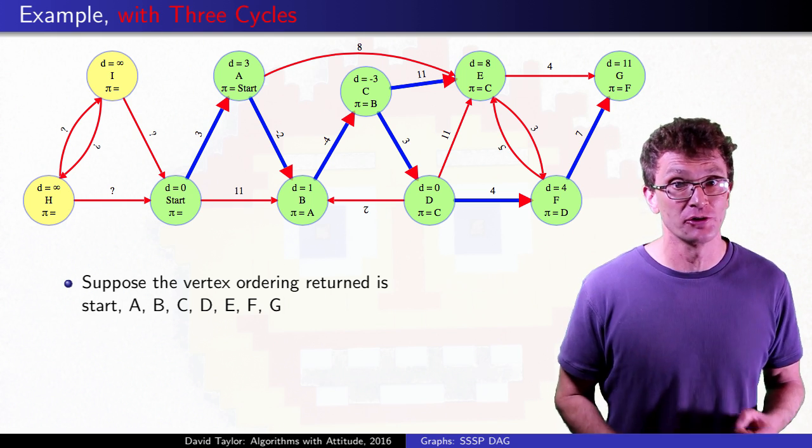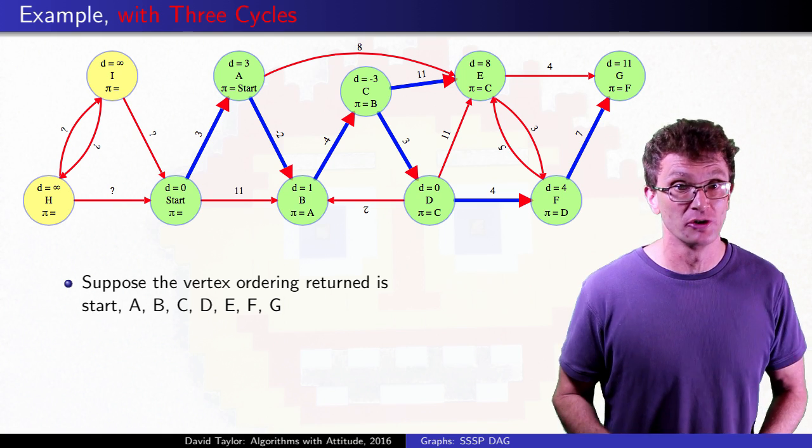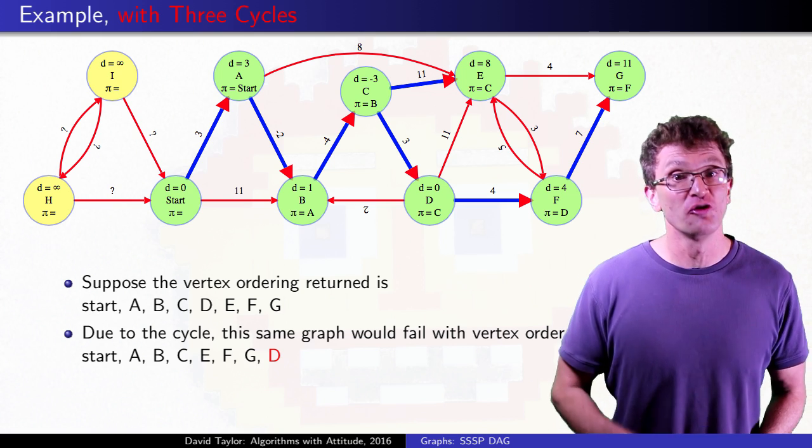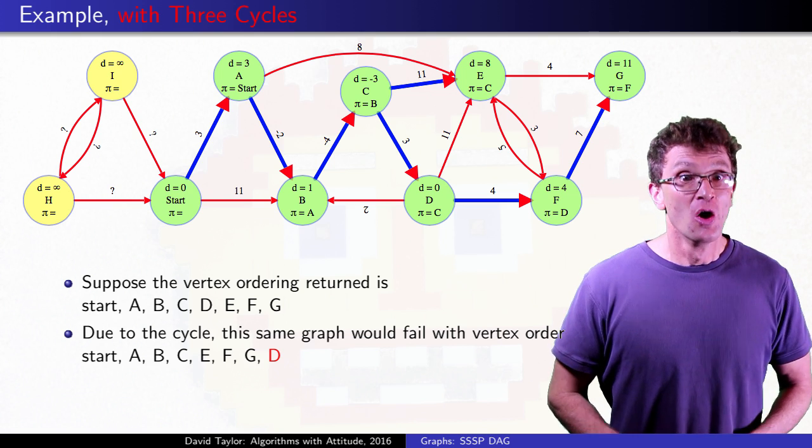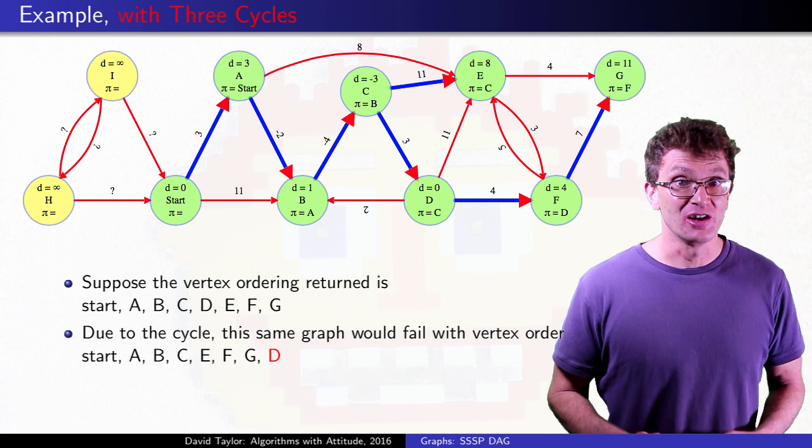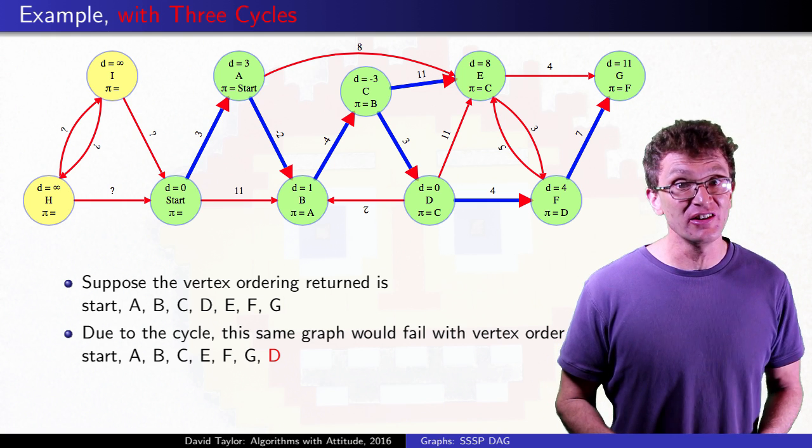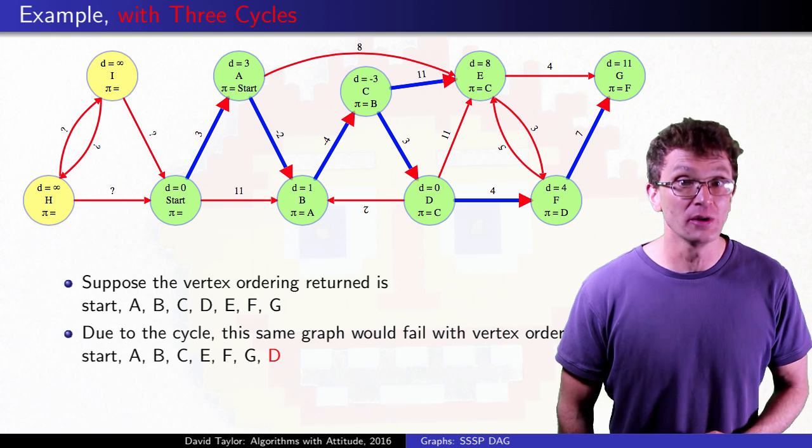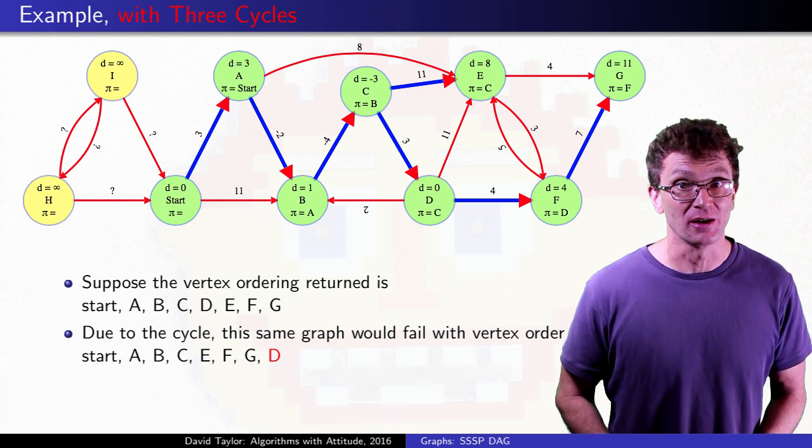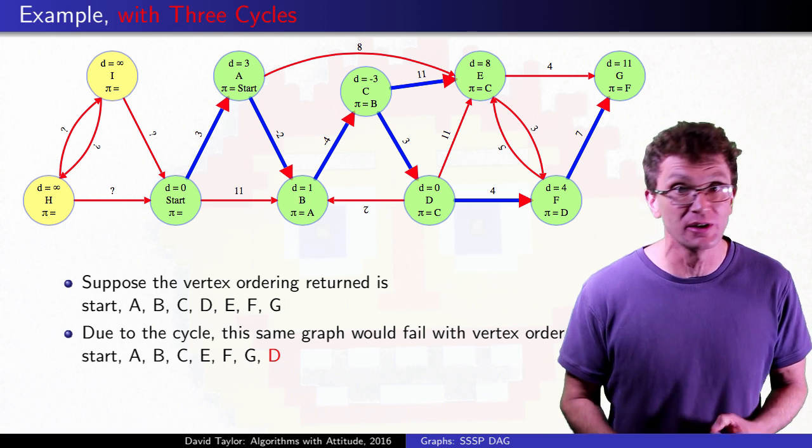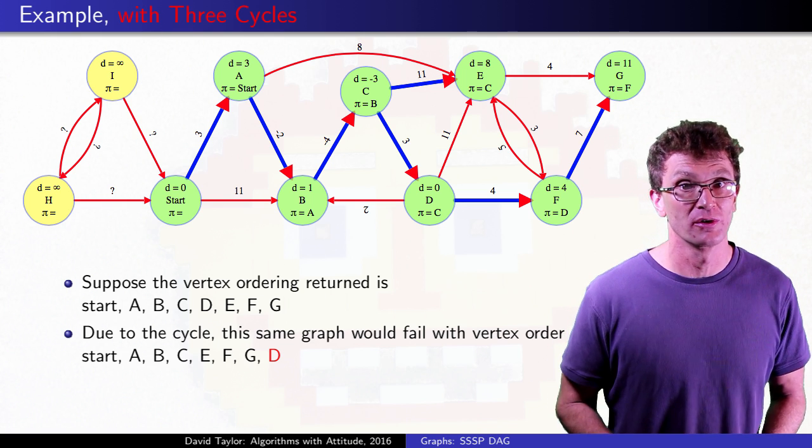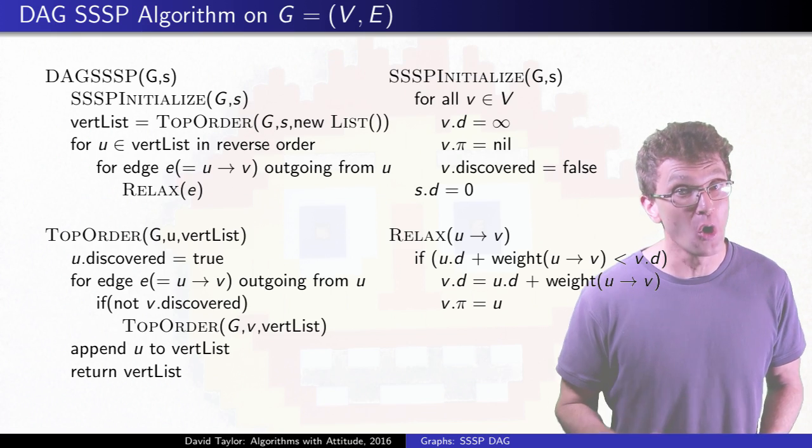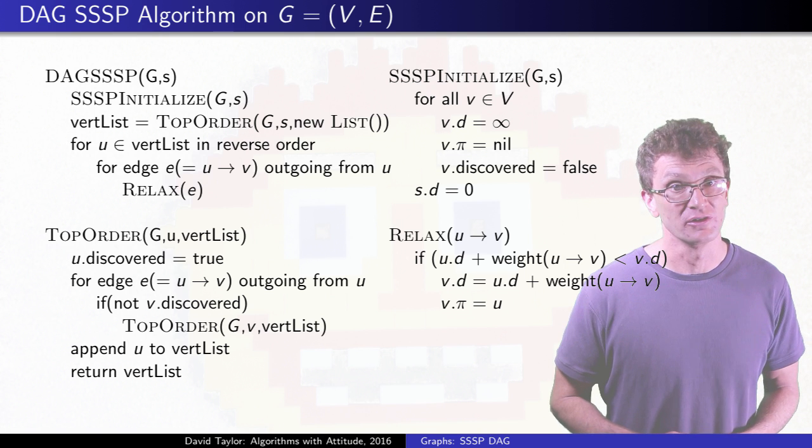On the other hand, if the depth first search part returned vertices in the order of start, A, B, C, E, F, G, D, the algorithm would fail with these weights. We need to check if a relaxation successfully lowers the distance estimate to an already finished vertex. That will happen only if the graph has a reachable cycle and the depth first search part doesn't get lucky in return a vertex order that allows us to relax each edge only once and still know that we have found correct shortest distances.